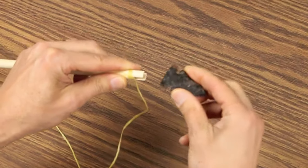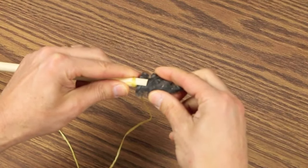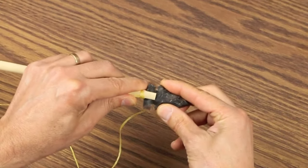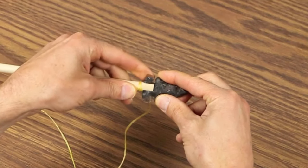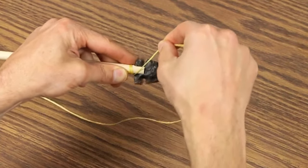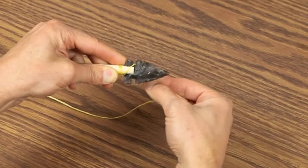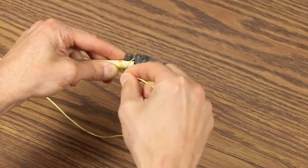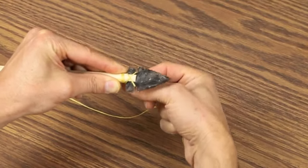Take the arrowhead, place it in the notch, slide it all the way down, center it, hold it with one finger gently. Then wrap the sinew through the notches in the arrowhead, going behind gently, coming back, and crossing over.